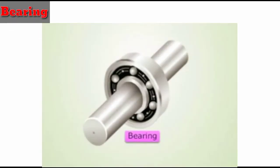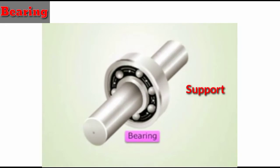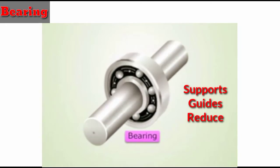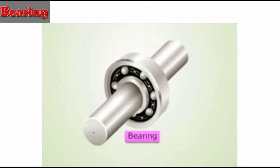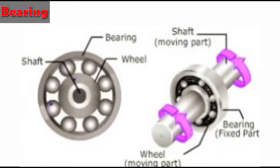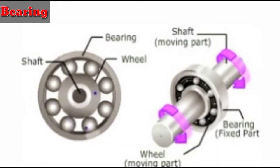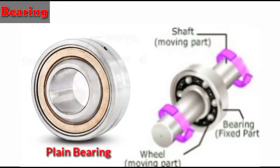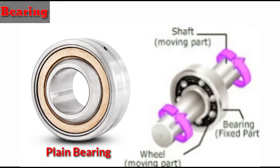Bearing is a machine element that supports, guides, and reduces the friction of motion between fixed and moving machine parts. The simplest form of bearing is the plain bearing, which consists of a shaft rotating in a hole.